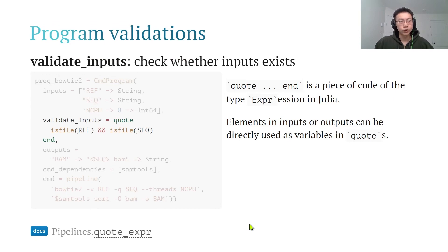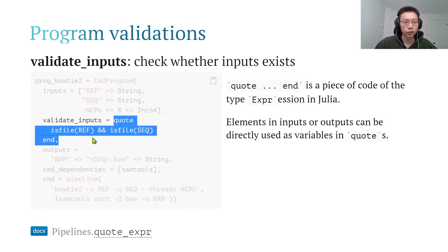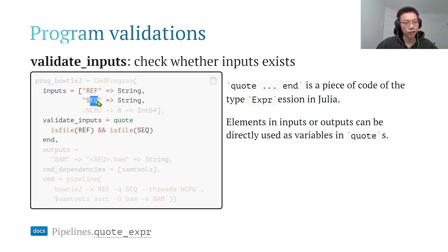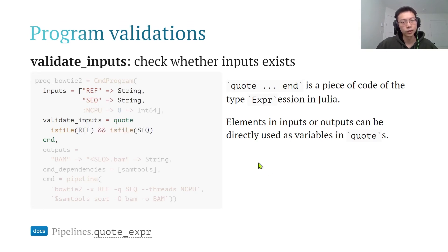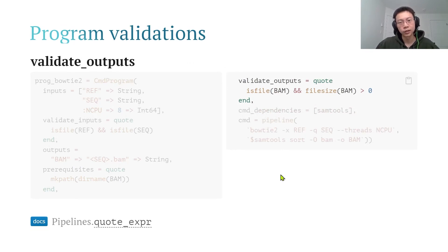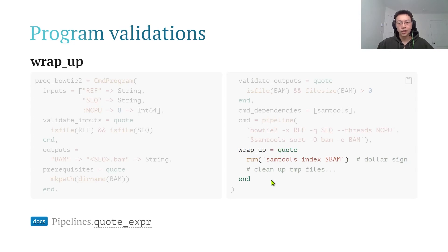The program also provides many ways to validate your inputs and outputs. Validate inputs accepts a function or a quote — a quote is an expression where elements, inputs, and outputs can be used directly as variables. You can also define prerequisites before running the main command, like ensuring a path exists. After the program runs, you can validate the output — checking whether the file exists and is not empty. Finally, you can have a wrap-up expression to delete temporary files or move outputs to another location.